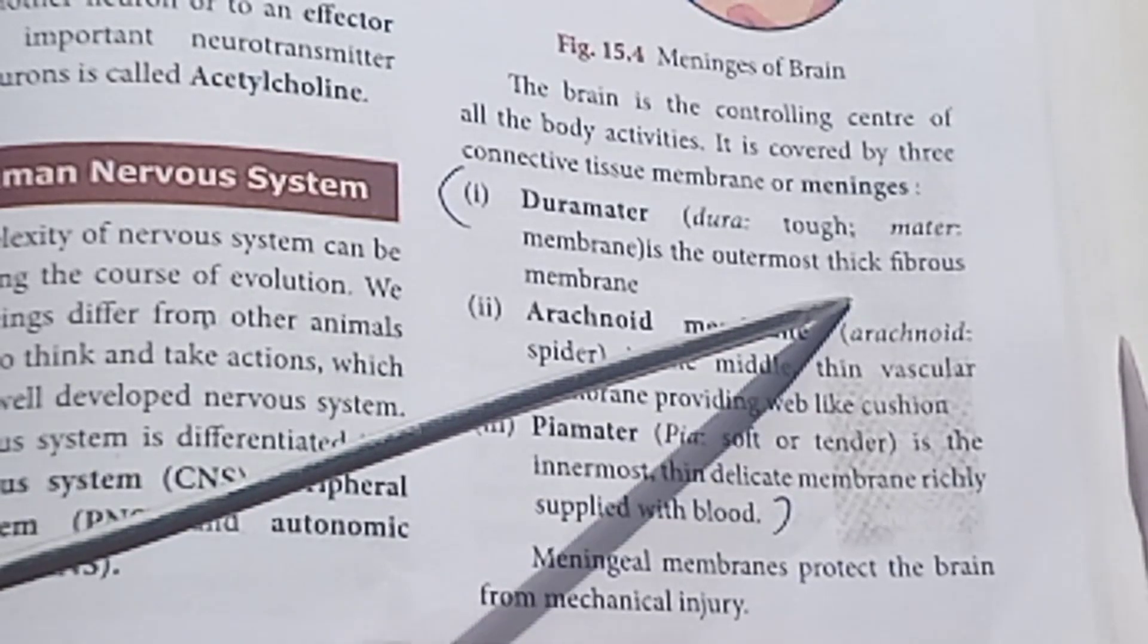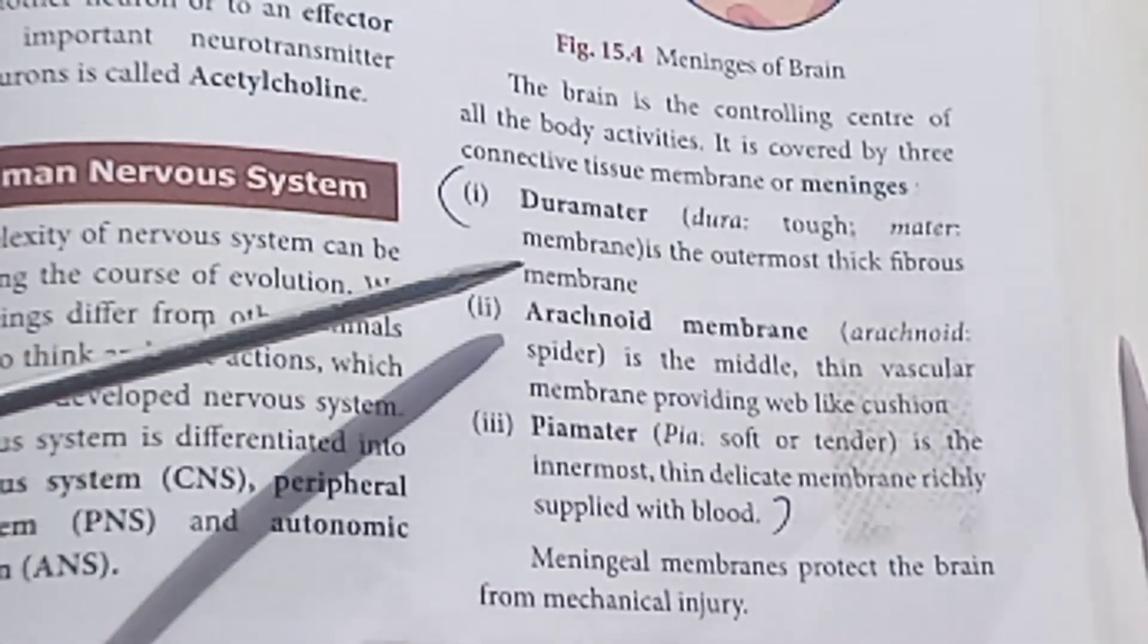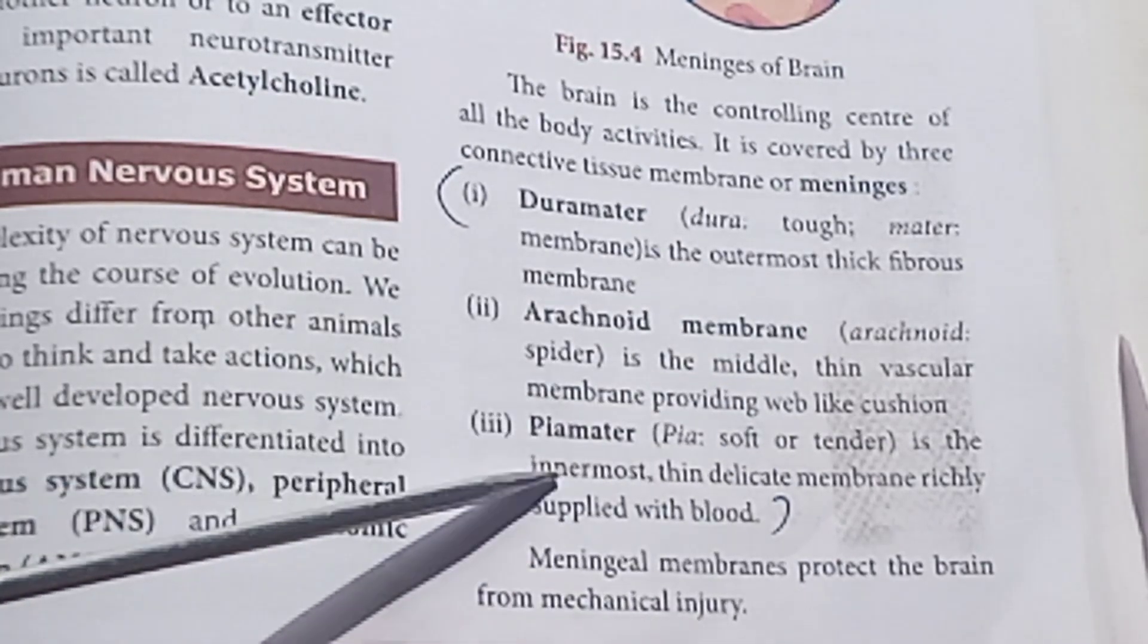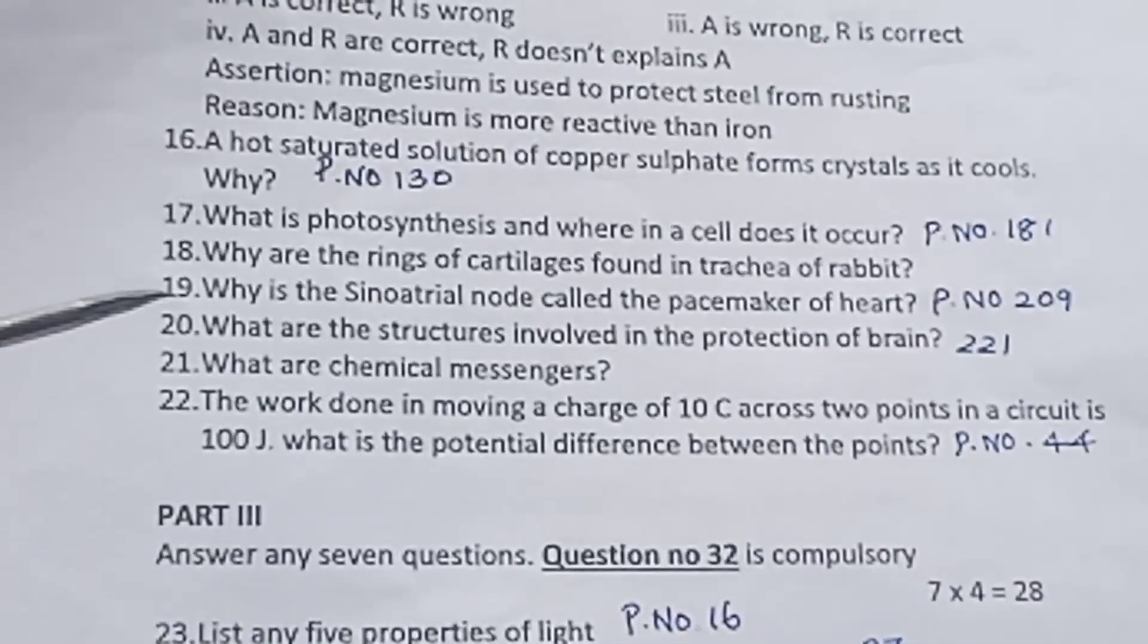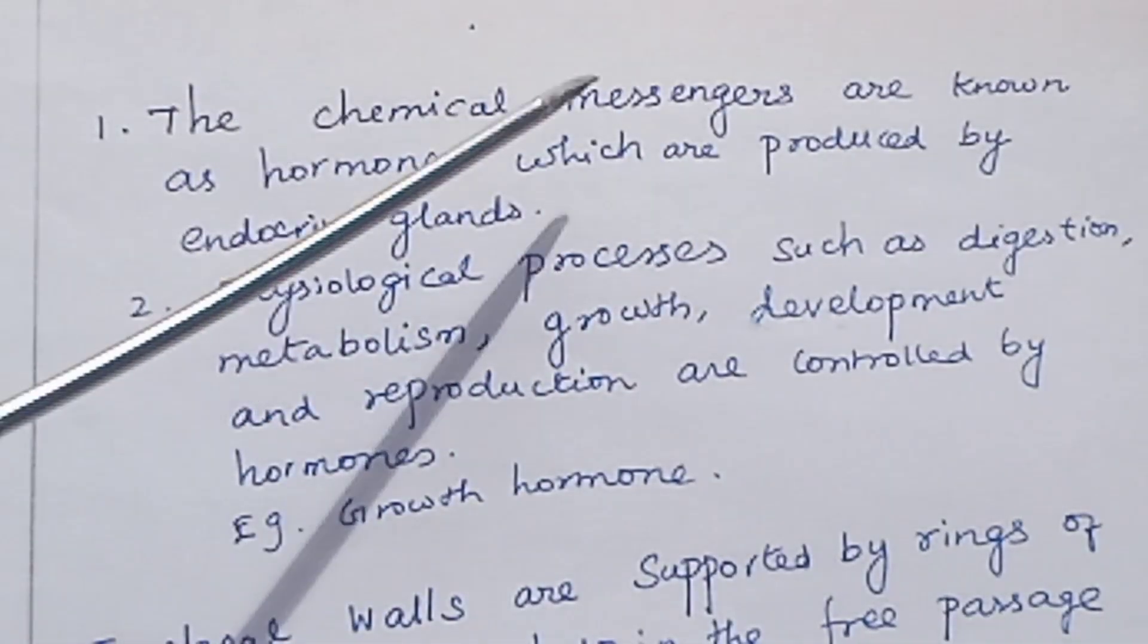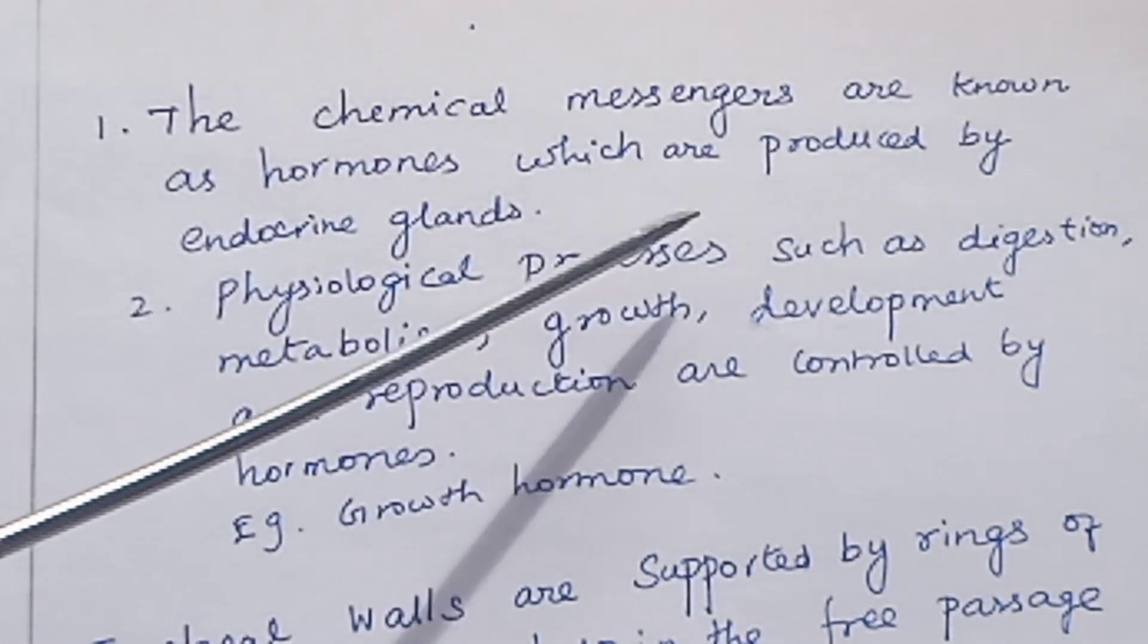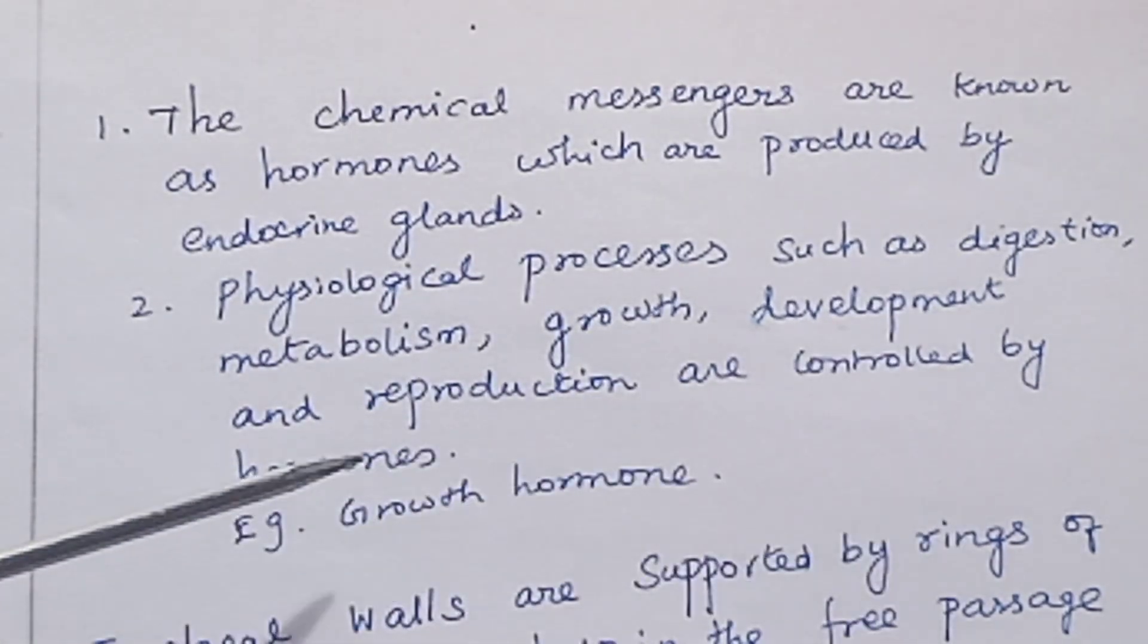Dura mater, outermost layer. Arachnoid membrane, middle layer. Pia mater, innermost. This is the answer. Question 21: What are chemical messengers? Very important question. The chemical messengers are known as hormones which are produced by endocrine glands. Physiological processes such as digestion, metabolism, growth, development, and reproduction are controlled by hormones. Example: growth hormone.